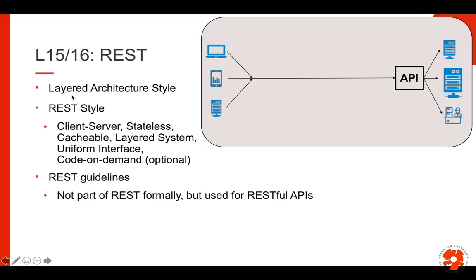REST is a proven concept and one of the reasons why the internet really works as it does. I started with the layered architecture style which underlies REST — how to separate a system into multiple layers like the front-end, back-end, and database layer. Then I went into REST itself, which has six constraints: client-server, statelessness, cacheability, layered system, uniform interface, and code on demand (which is optional). The uniform interface is the most interesting for us when designing APIs — how to name things and how to structure URLs.